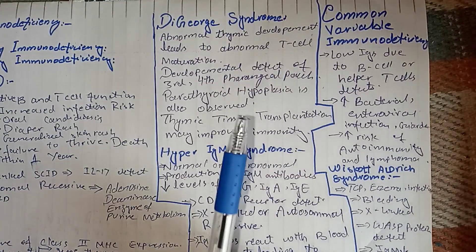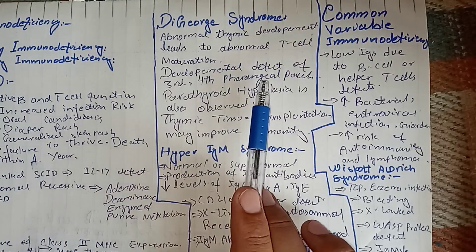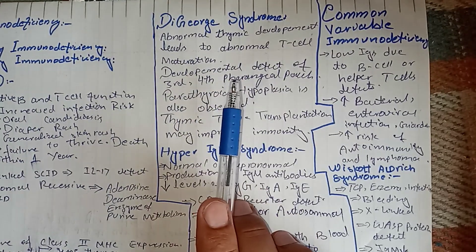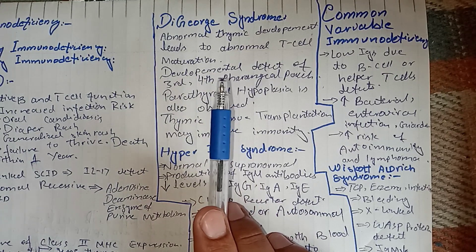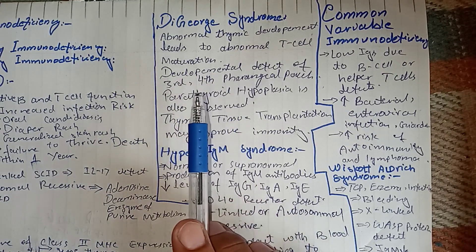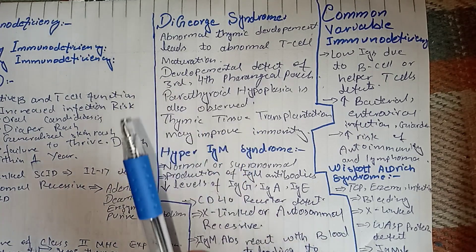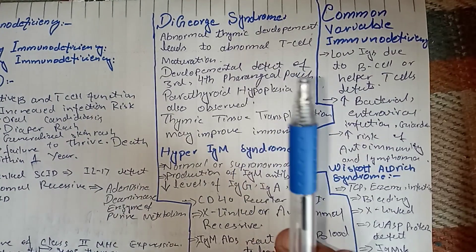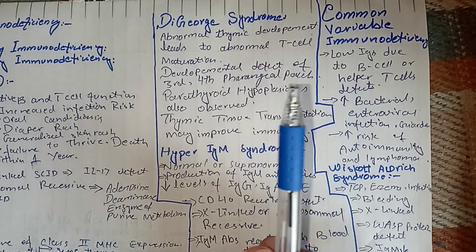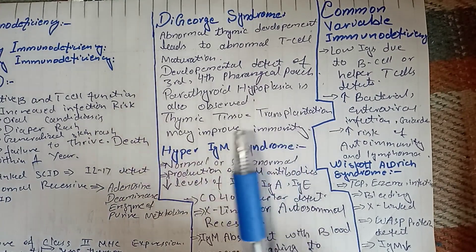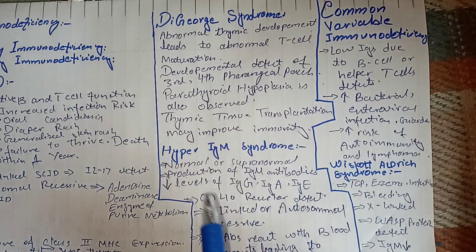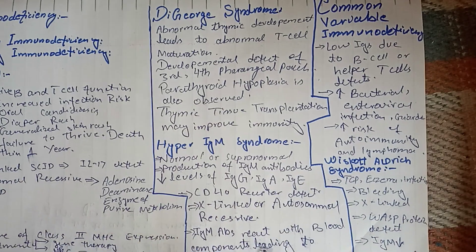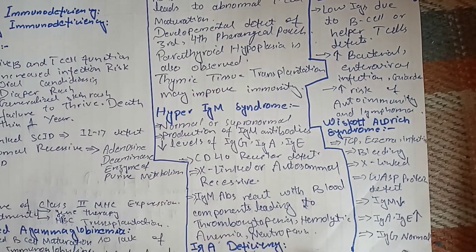DiGeorge syndrome is due to a defect in development of the third and fourth pharyngeal pouches. When these pouches don't develop properly, there is defective thymus and parathyroid development. Defective thymus development leads to abnormal T cell maturation — it primarily involves a T cell defect. Thymus transplantation may help improve immunity.